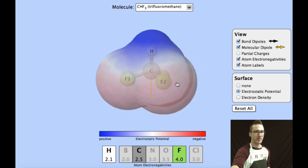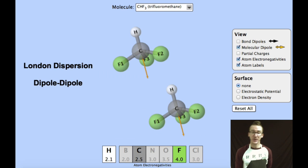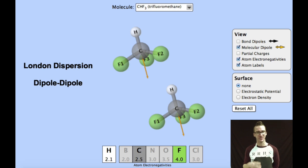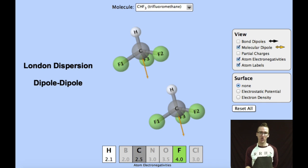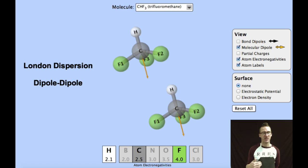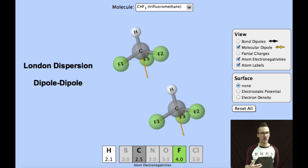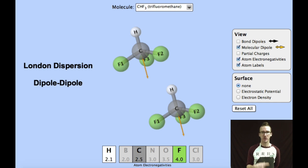The electrostatic potential map helps you see that slightly negative and slightly positive region. As we think about the intermolecular forces between molecules of trifluoromethane: we always have London dispersion forces because all atoms in the molecule have electrons, and because each molecule acts as a dipole, we also have dipole-dipole interaction — a somewhat stronger intermolecular force. However, we do not see hydrogen bonding, because in order for that to occur, a hydrogen atom must be bonded to one of the very electronegative atoms — nitrogen, oxygen, or fluorine — and that is not the case in trifluoromethane.